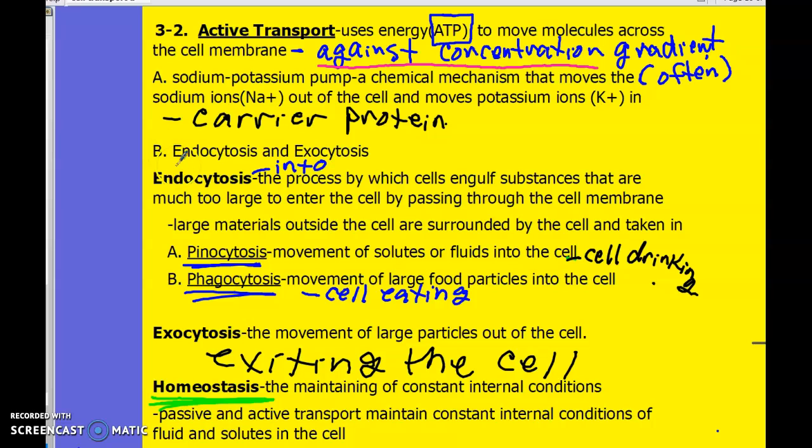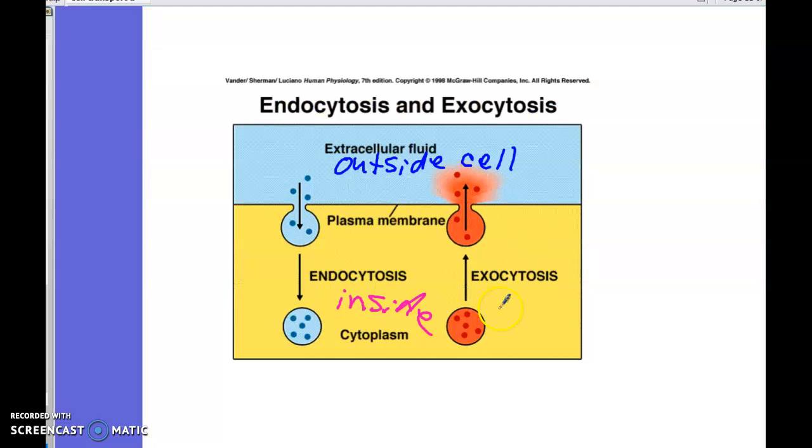And then there's two processes called endocytosis and exocytosis. So endo means into, exo means to exit. So endocytosis is the process by which cells take in large particles, particles that are too large to simply pass through the cell membrane. Those large particles might be nutrition particles that need to get into the cell. And so the cell has this really cool process. I actually have a little visual to show you here.